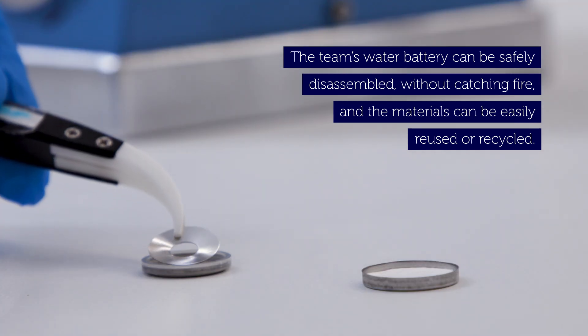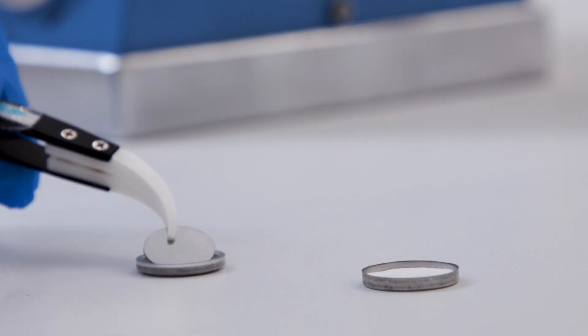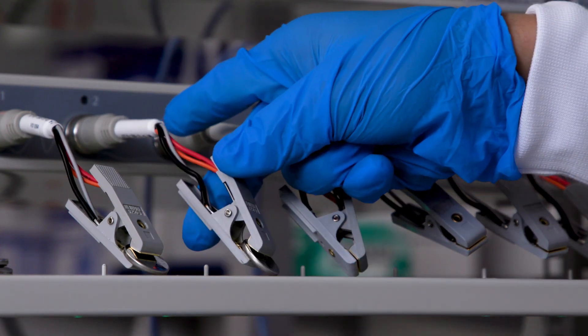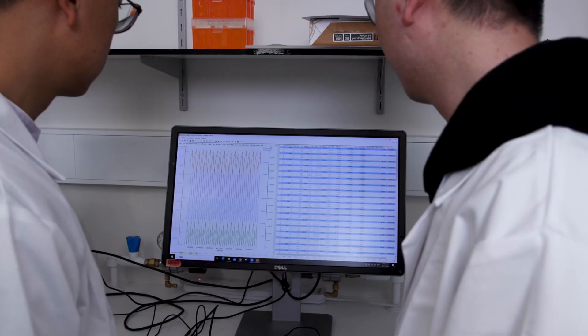We use quite unique nanomaterials as the electrode material. They are chemically and morphologically modified to make them high performance in water battery. Our developed water battery is one of the best performance batteries reported up to now.